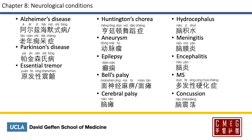Hydrocephalus is 脑积水. Meningitis is 脑膜炎. Encephalitis is 脑炎. Multiple sclerosis is 多发性硬化症. Concussion is 脑震荡, 荡 actually meaning to swing.